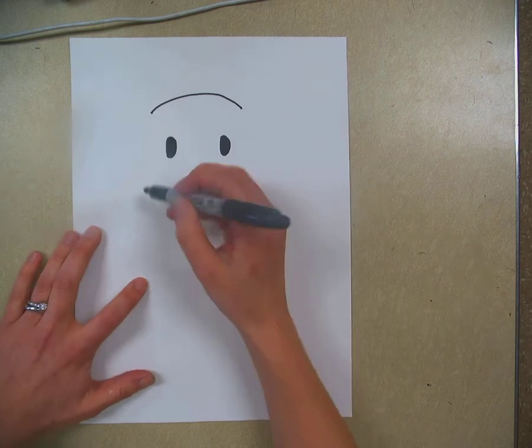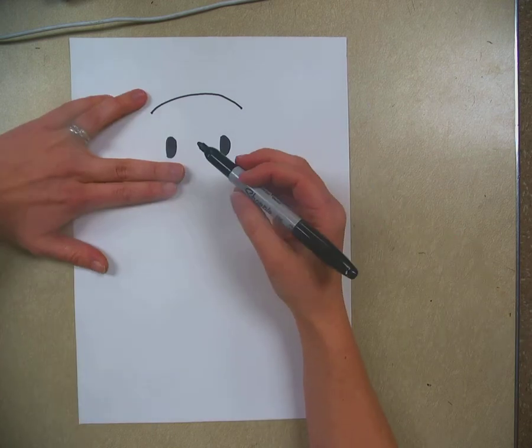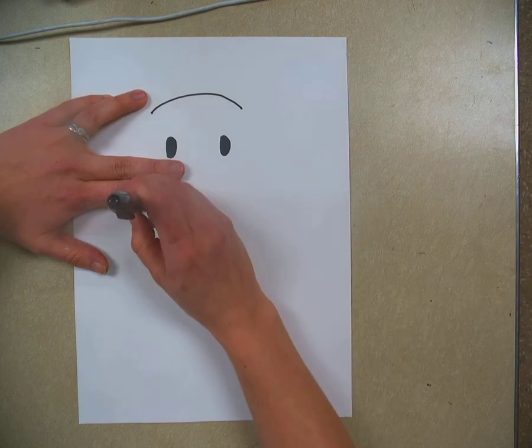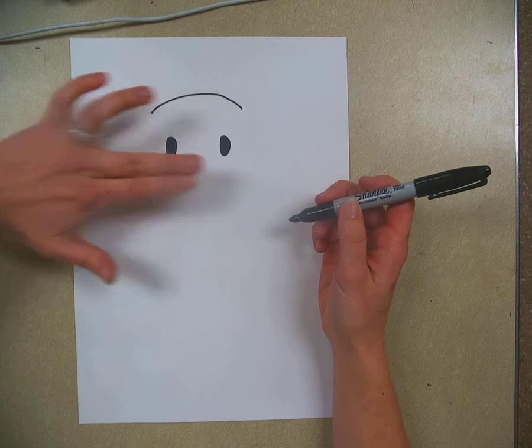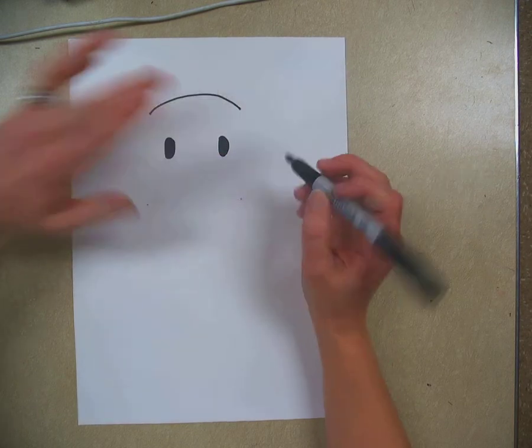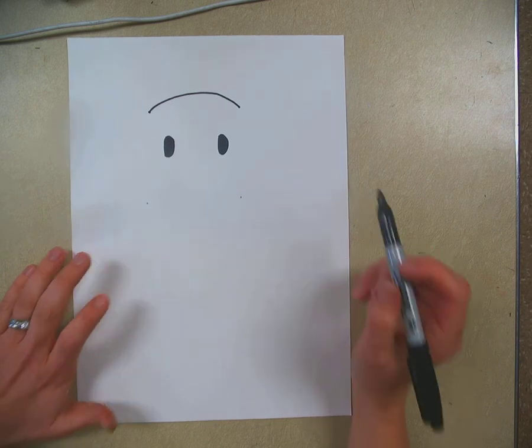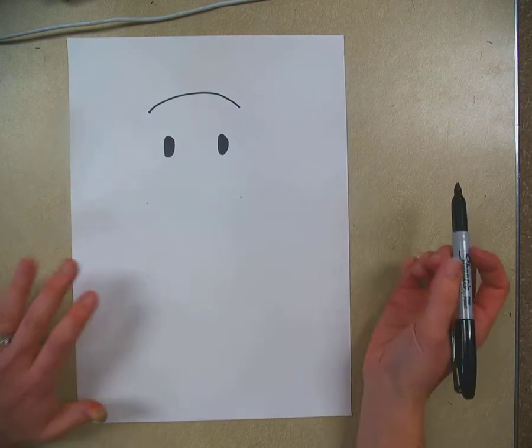Above our eyes we're going to draw a curve. That's going to be the top of our elephant's head. Now off to the side, we're going to start about two finger lengths down from your eye. I would just put a dot, and you can do the same thing on the other side. This is where we're going to start to draw our trunk.